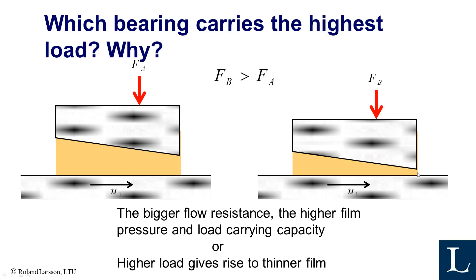Coming back to the question: which bearing carries the highest load? It must be the right-hand side bearing that carries the higher load. In that case the film thickness is smaller, and the flow resistance is bigger because it's a smaller constriction — it requires more force, more pressure, more pressure gradient to push the fluid through this small constriction. The higher the pressure gradient, the higher the pressure build-up, and the higher the load carrying capacity.